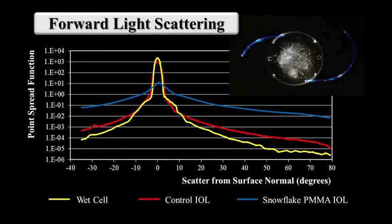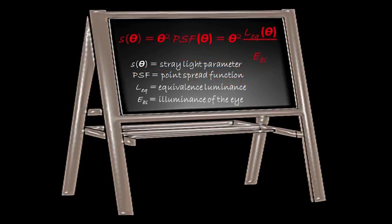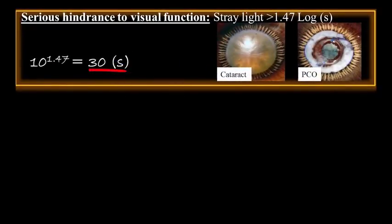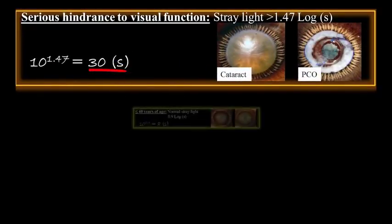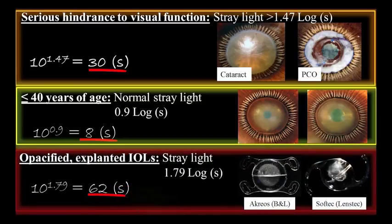Through specific mathematical relationships, scattering can then be converted to a more clinically relevant metric to determine the potential impact of opacification on visual performance, the stray light, which is expressed in logarithmic units. Vandenberg and associates describe the impact of stray light in human vision, with serious hindrance found above 1.47 log units. This corresponds to almost four times the amount of stray light in a 40-year-old eye. In some opacified explanted IOLs we analyzed, we observed an increase in stray light of almost eight-fold in comparison with the young eye.